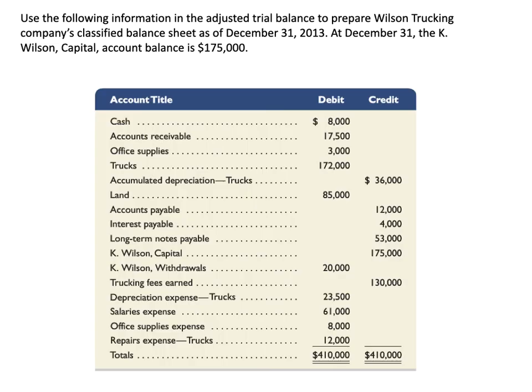Let's look at an example on preparing a classified balance sheet. Using this adjusted trial balance — after adjusting entries have been made, just prior to the financial statements being created — I'd like you to create a classified balance sheet for the Wilson Trucking Company. Press pause on the video and complete the classified balance sheet with the asset section, the liability section, and the owner's equity section. Then come back and we'll take a look at it together.